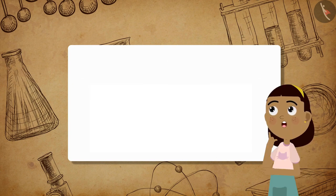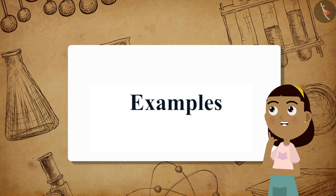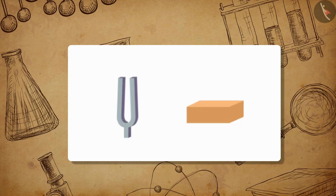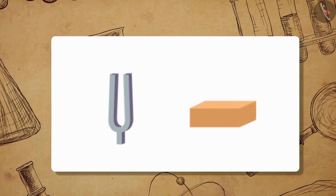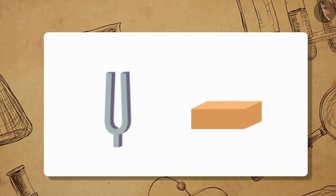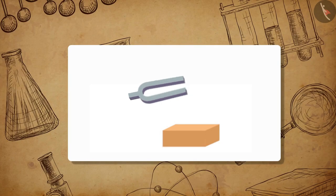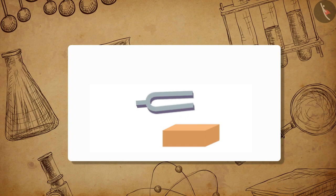Now let us take a few simple examples to find answers to these questions. Take a tuning fork and a rubber pad. Hit one of the prongs of the tuning fork on the rubber pad to set the fork on vibration.